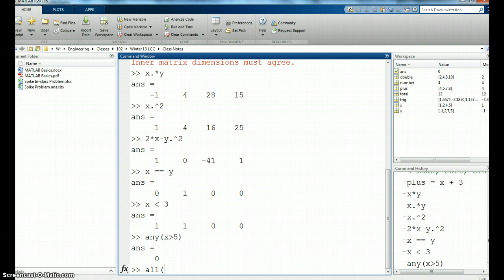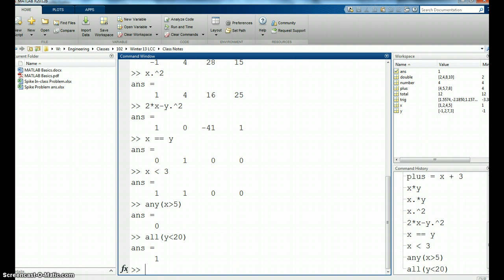Are all the values of y less than 20? Well, yes they are. So the any and all functions are telling us a yes or a no. They're not telling us a location, not telling us what the values are. They're just saying are they greater than 5, yes or no.